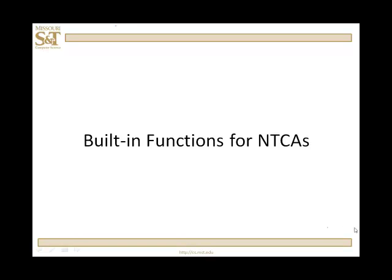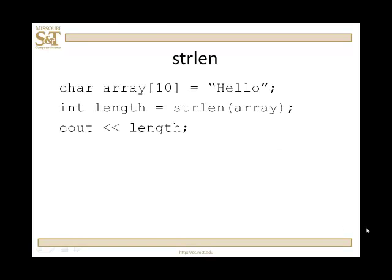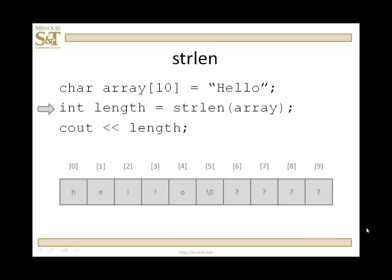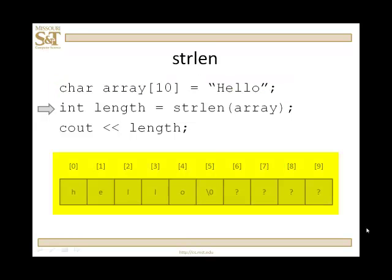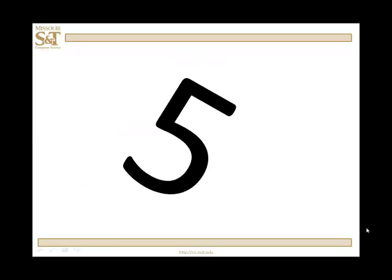Let's take a look first at the string length function. String length will return an integer and take in a null-terminated character array, and what it returns is the length of the data in that array. For example, if I declare a character array and initialize it to "hello", the data is of length five — there are five characters before the null character. Passing the array to string length will return five.